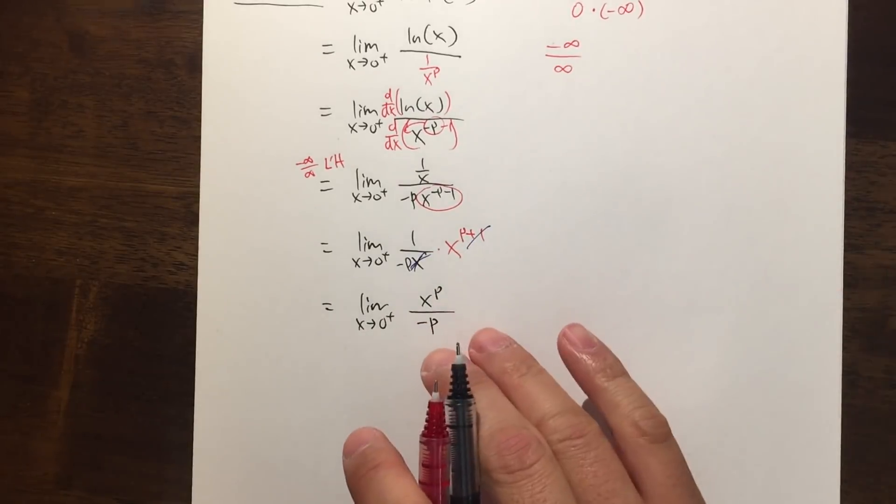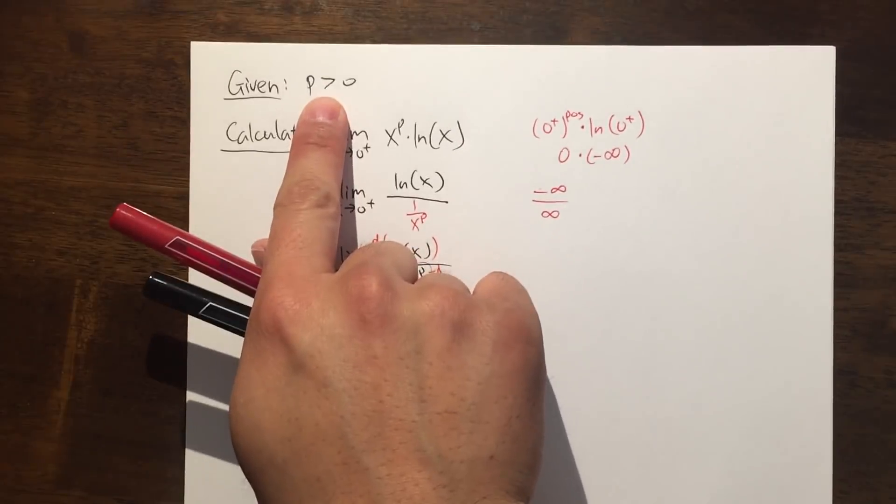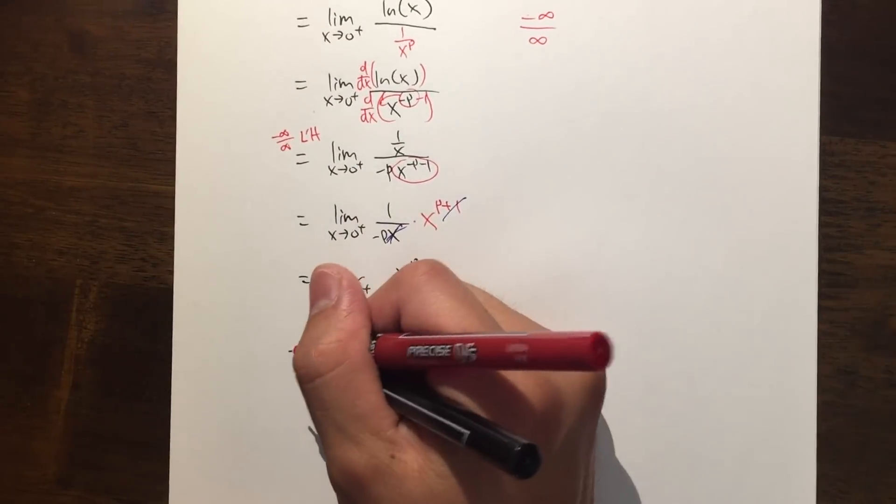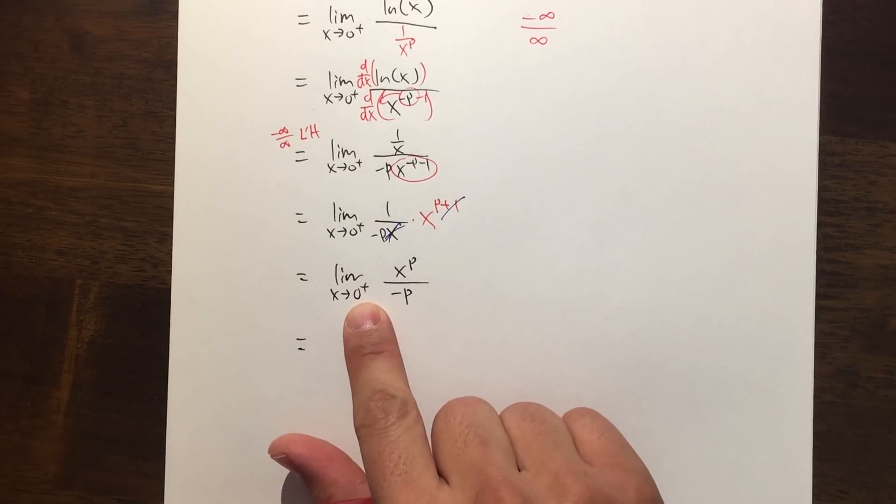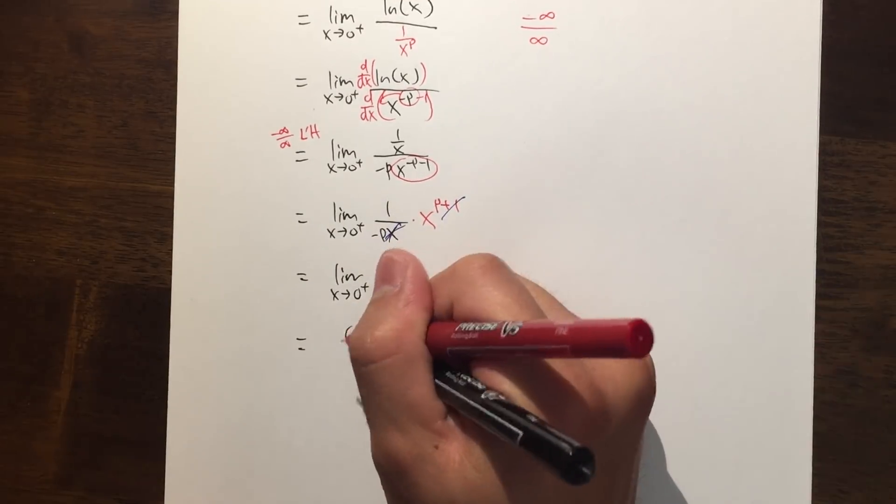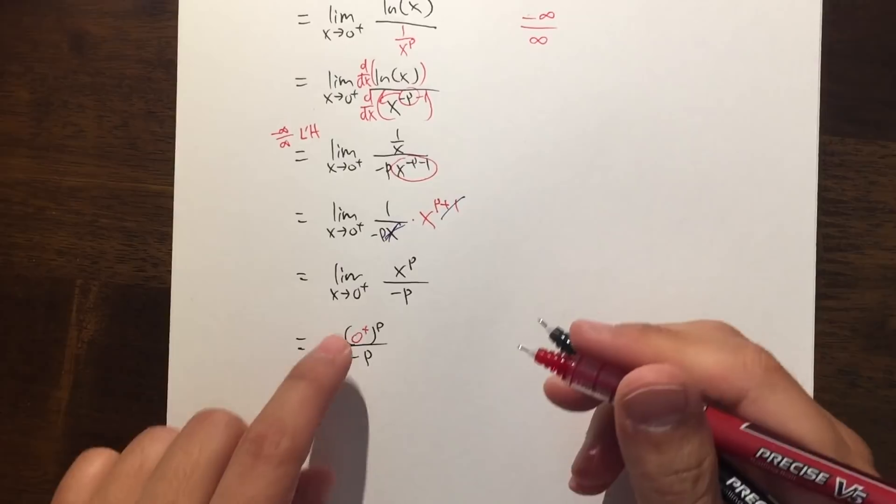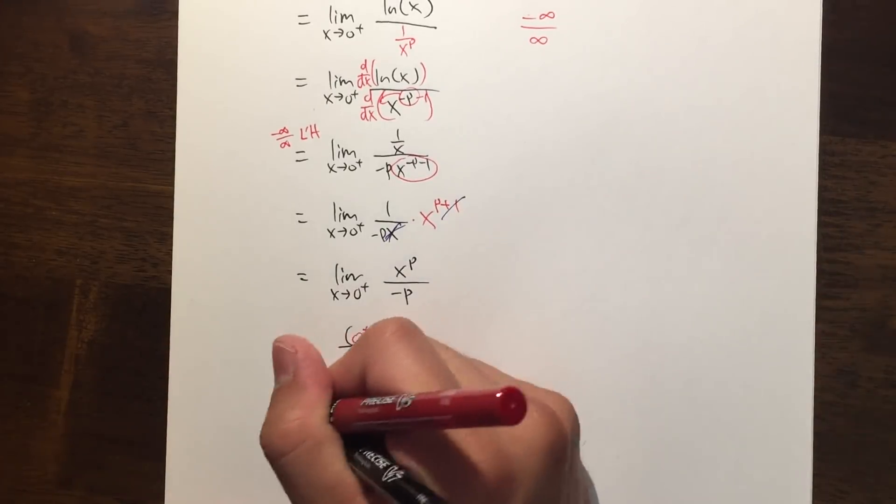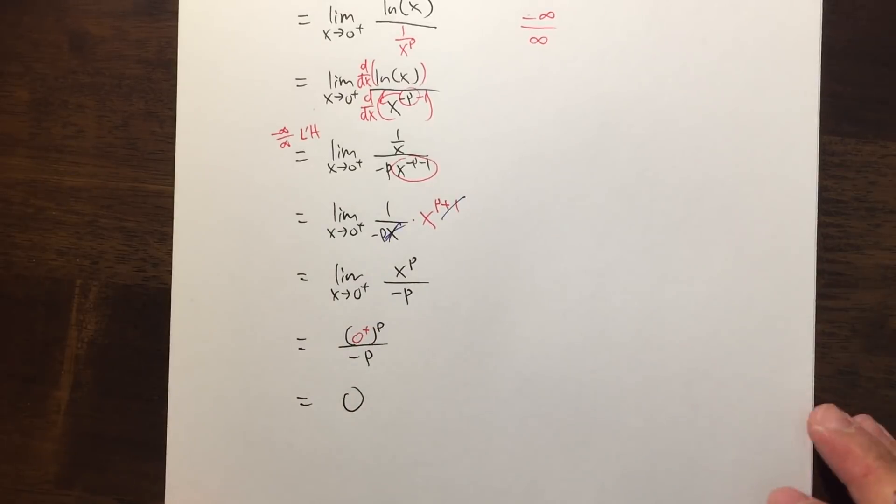And remember, the p is just a number, and we are assuming that p is greater than 0, so this is legitimate. And finally, you will see that when you plug in 0 plus into here over negative p, on the top is 0, divided by a negative whatever, you get 0. So, in the end, you get 0 for the answer.